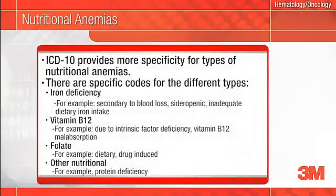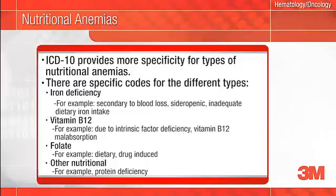New in ICD-10 is the ability to identify specific types of nutritional deficiency anemias. In ICD-9, different types of anemia were grouped under a generic code such as folate deficiency anemias. As you can see on screen, there are specific codes for the different types of iron, vitamin B12, folate, and other nutritional deficiency anemias such as vitamin B12 deficiency anemia due to selective vitamin B12 malabsorption with proteinuria or drug-induced folate deficiency anemia. Therefore, it's important to detail the specific type of deficiency anemia in your notes.